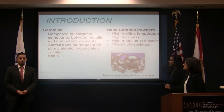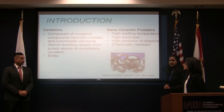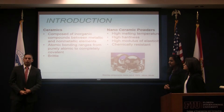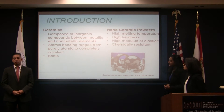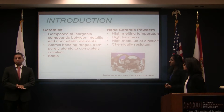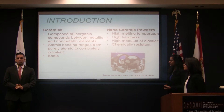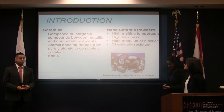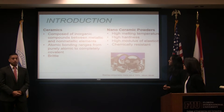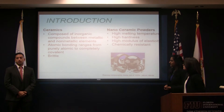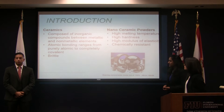Ceramics have been around for a very long time. They're generally known as brittle, composed of inorganic compounds, and they range from non-metallic to metallic elements. The atomic bonding goes from purely atomic to completely covalent. On the other hand, nanoceramic powders have been synthesized for less than 40 years. They have a high melting temperature, high modulus of elasticity, hardness, and strength, and they're chemically resistant.